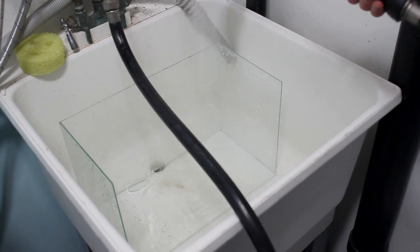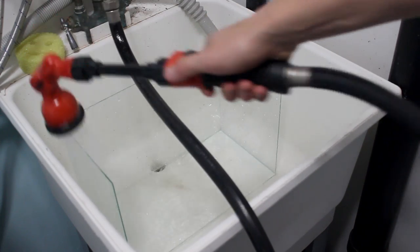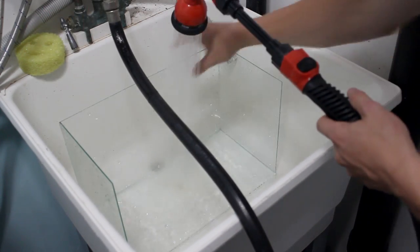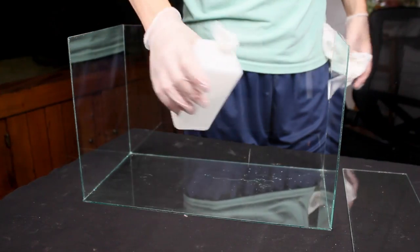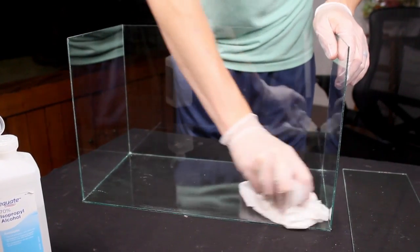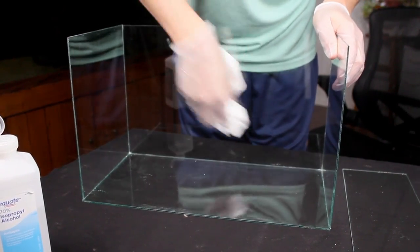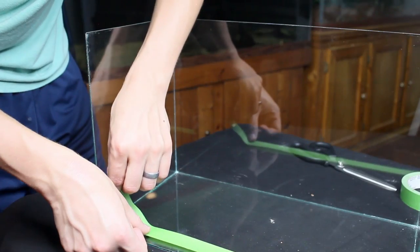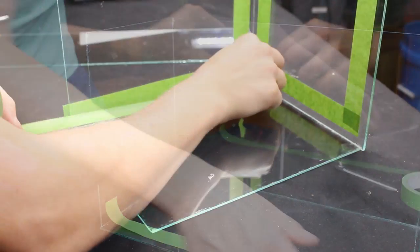From here I always like to give the glass a good rinse to remove any excess debris. Once clear I wipe down the glass with rubbing alcohol to ensure the surface of the glass is as clean as possible for the new silicone. Before applying it I always tape everything off to make clean beads.